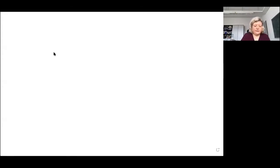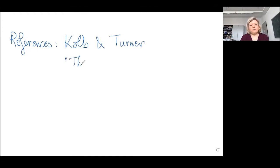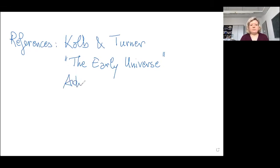But first, I actually noticed yesterday that I didn't give you references. So here are a couple of references that can be useful. Starting with a couple of books — one I still like a lot is the book by Kolb and Turner, which is called 'The Early Universe,' which is still a very good book, especially for the WIMP mechanism and the thermal Big Bang.